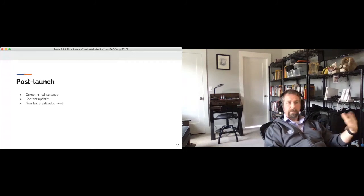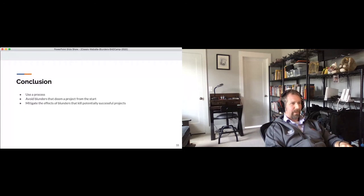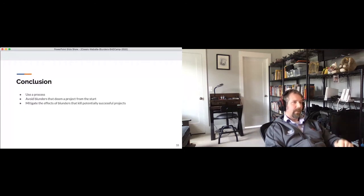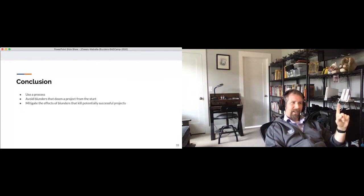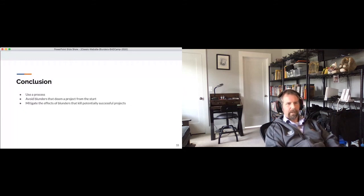In conclusion: use process, avoid blunders that doom a project from the start, and mitigate the effect of blunders that could potentially kill a successful project. Thank you, BadCamp 2020. I'll take some questions. How much formal documentation do we do in early discovery? It depends on the project — we usually spend about 20% of the project budget on discovery and planning, covering both discovery and implementation planning.